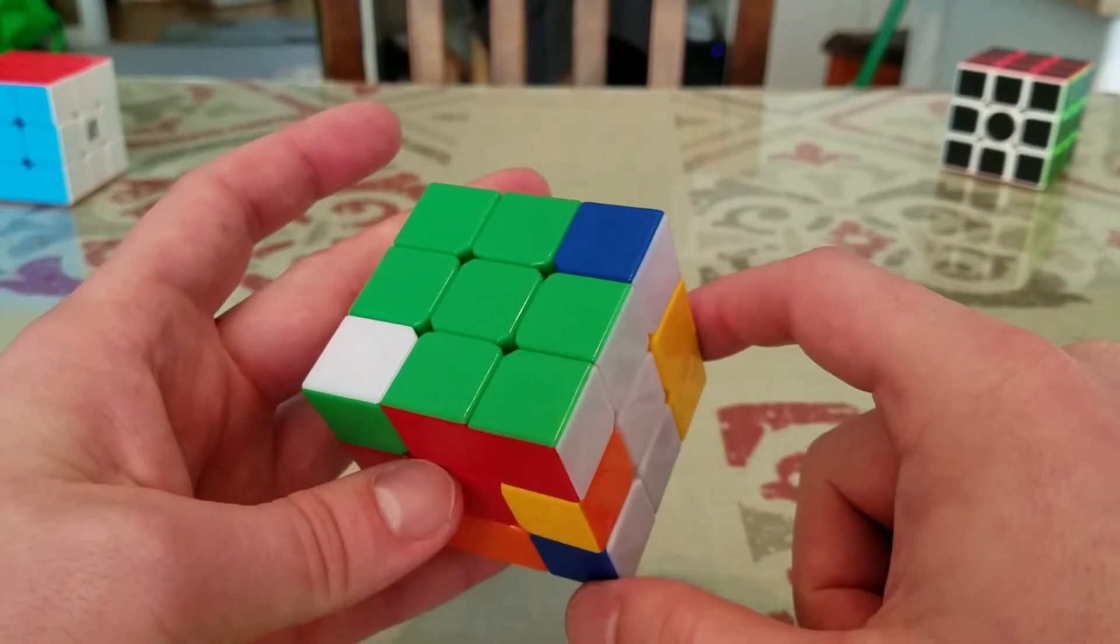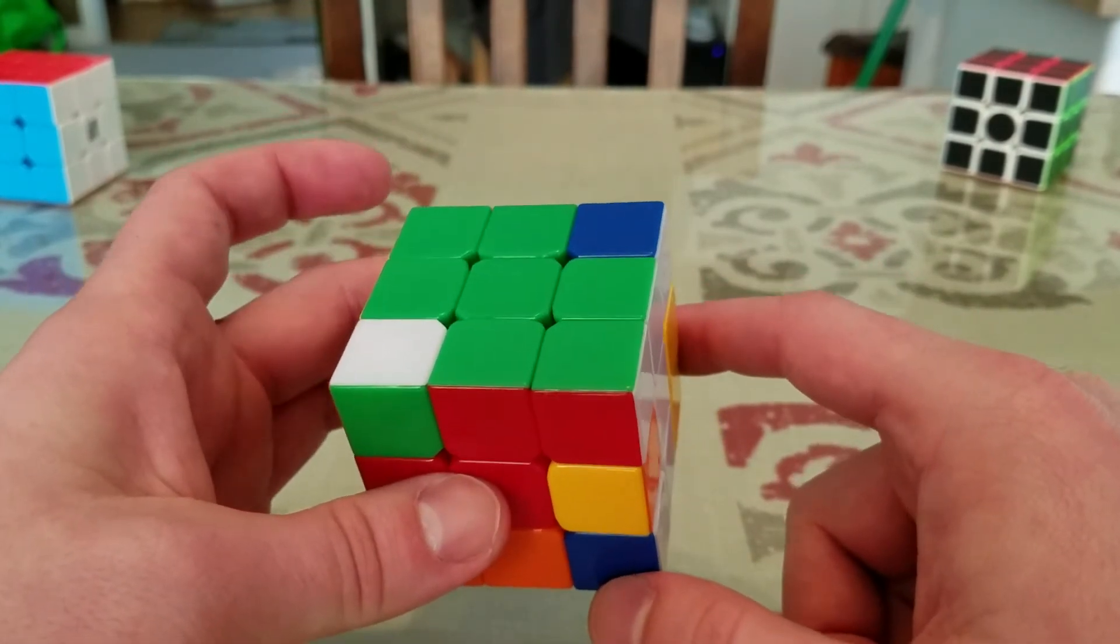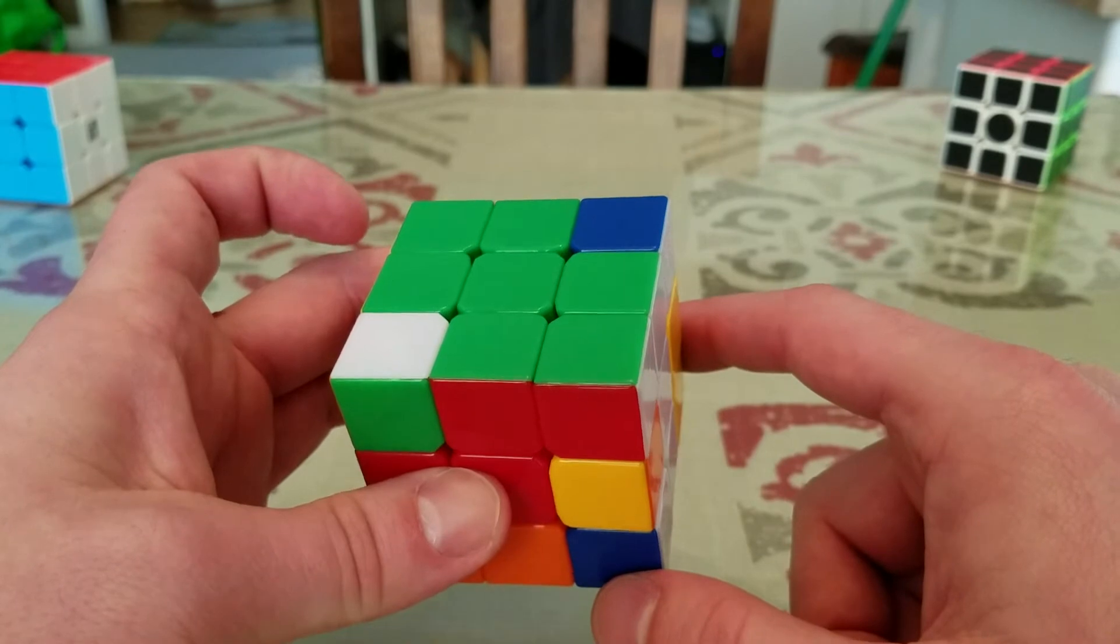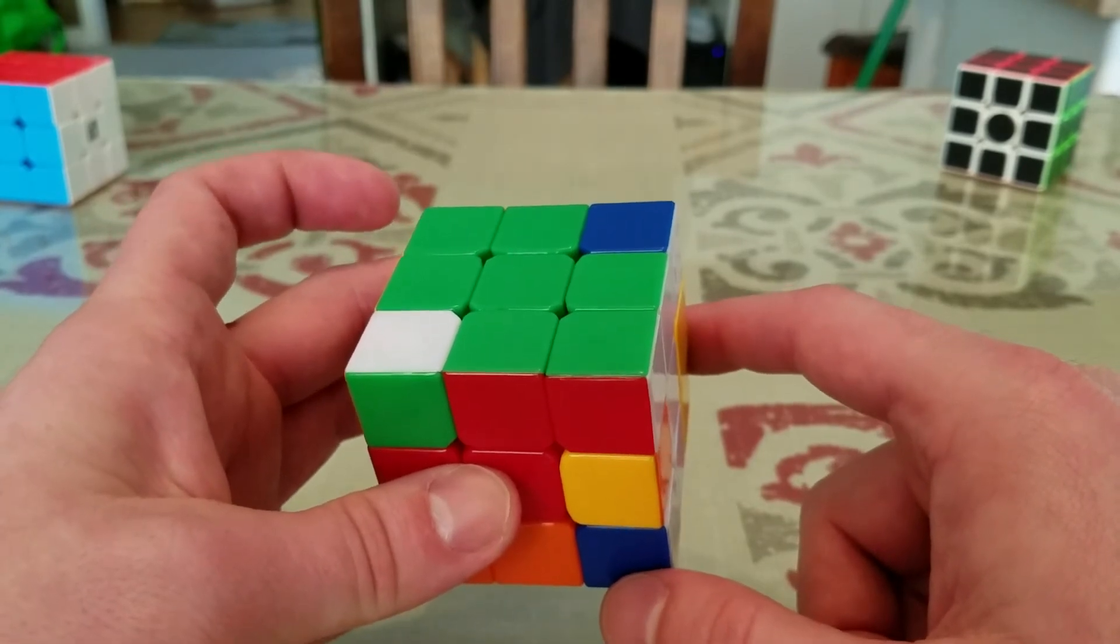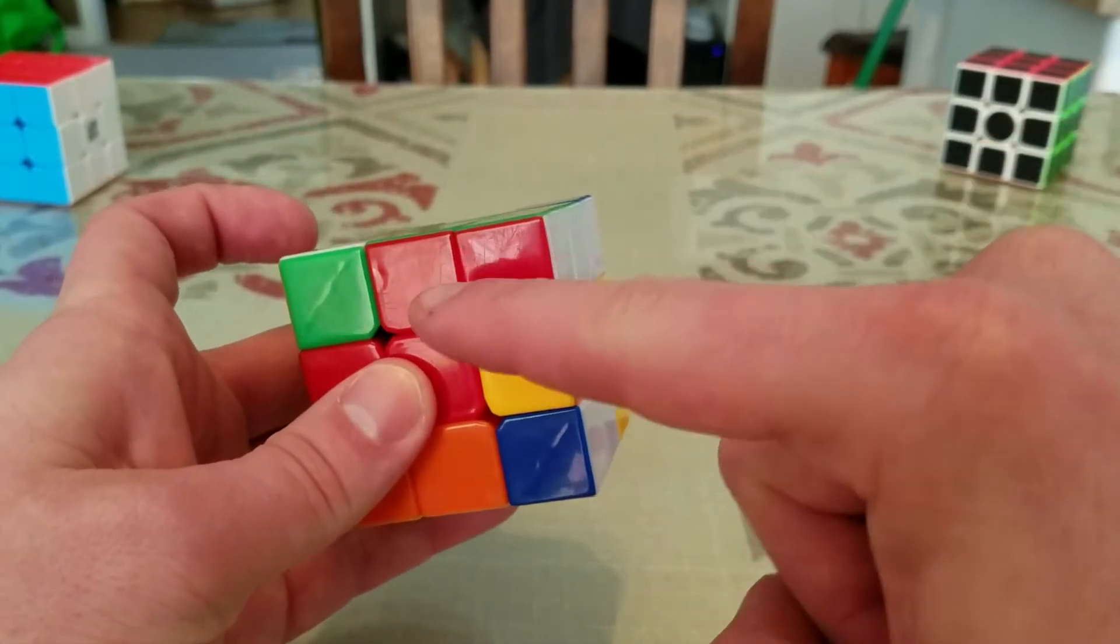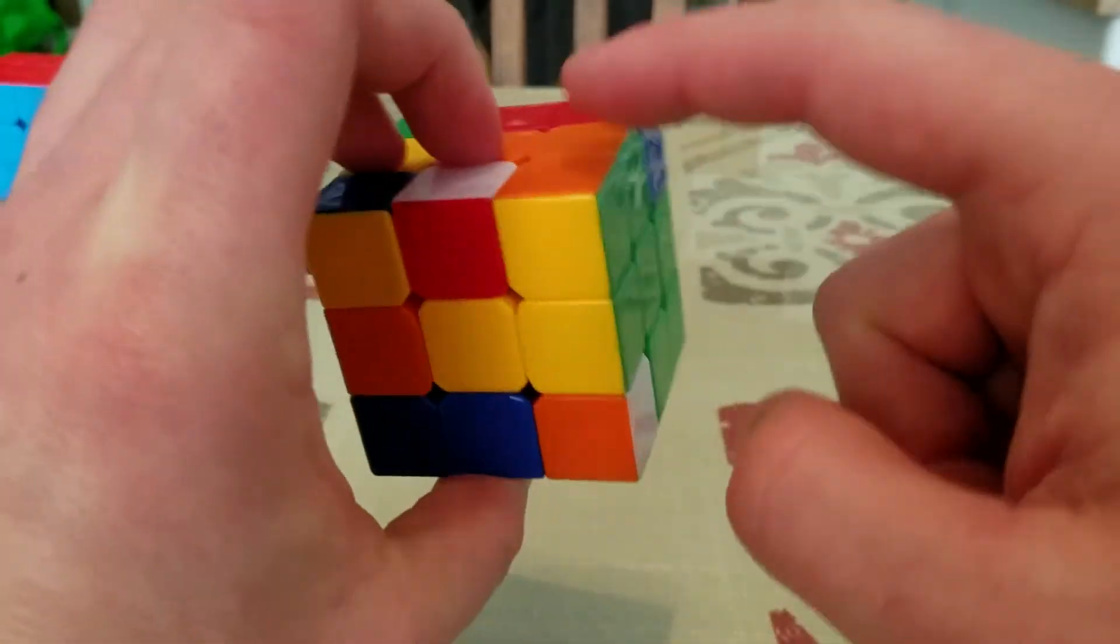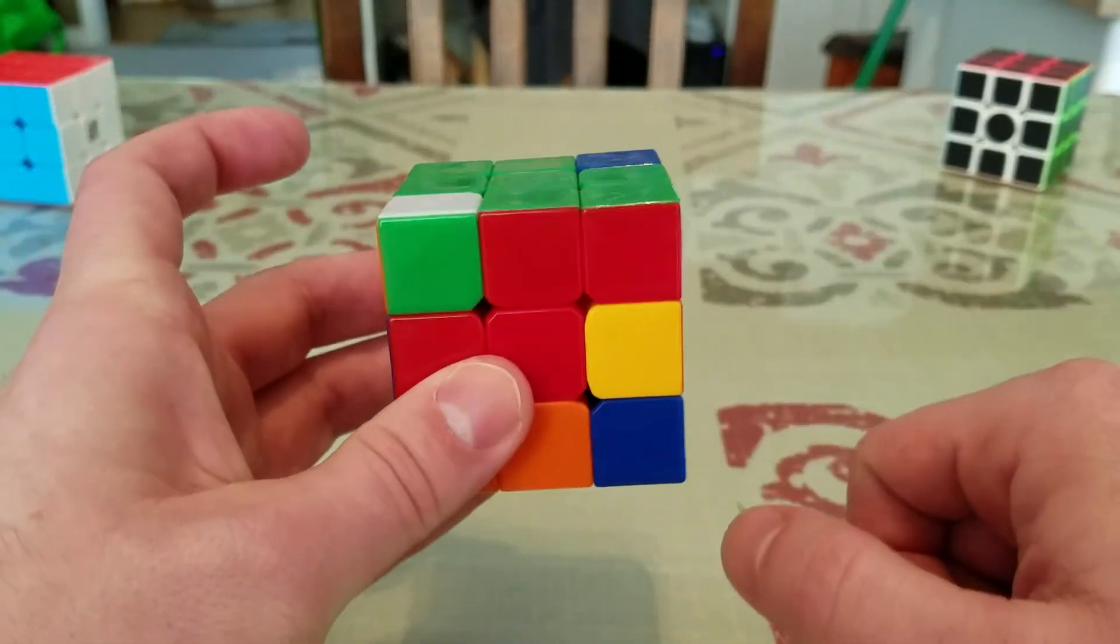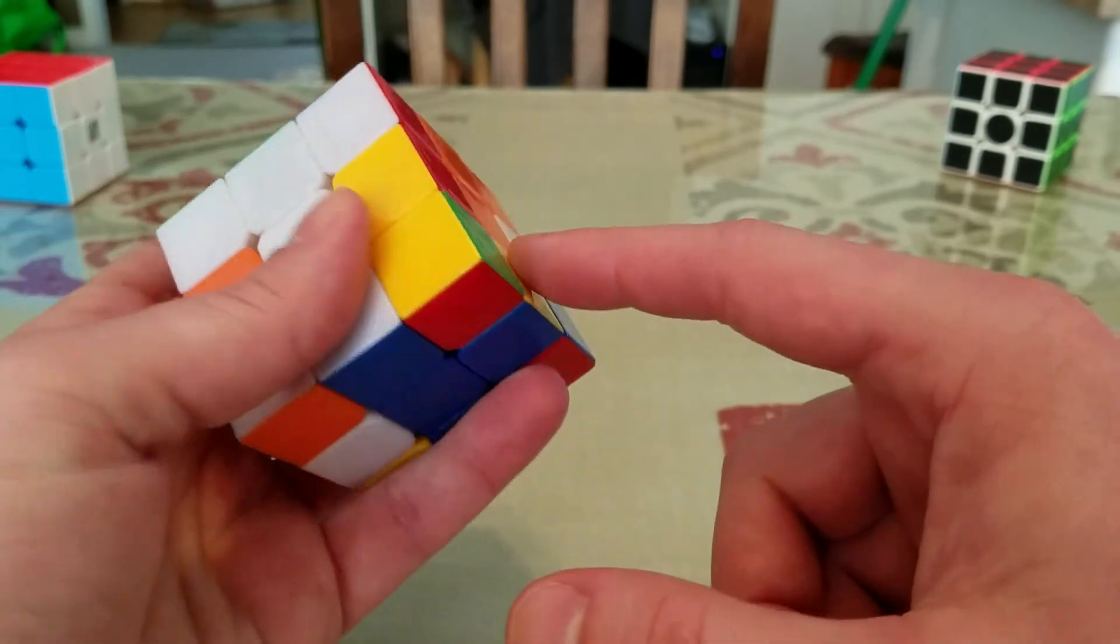This move is very important, and it will come into play later. So if you can practice this move and master it, it will make your life much easier later on. So now we have two corners that are both the right color and the right orientation.